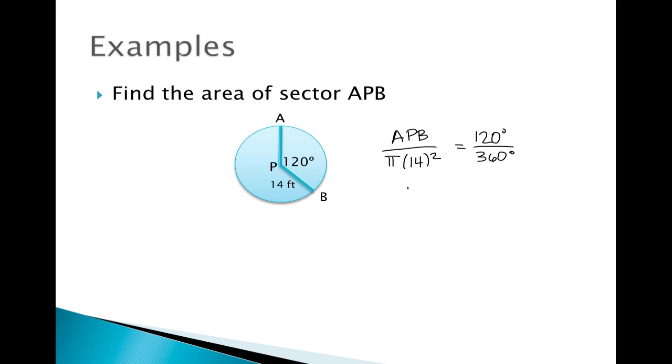So when you set up your equation to solve for the area of APB, you get 120 times the area of our circle, so pi times 14 squared, all divided by 360 degrees. When you plug that into your calculator, you find that the area of APB is approximately 205 units.